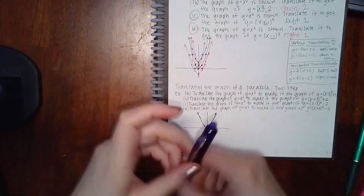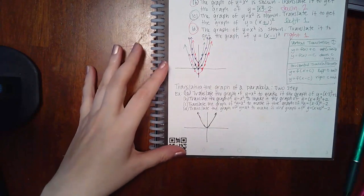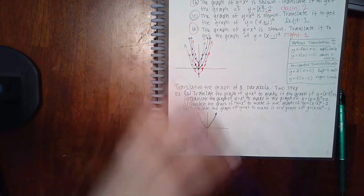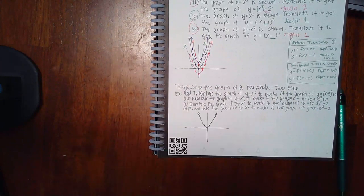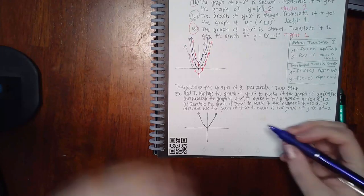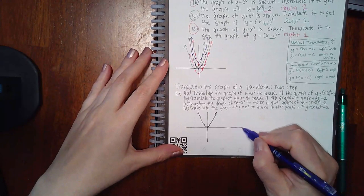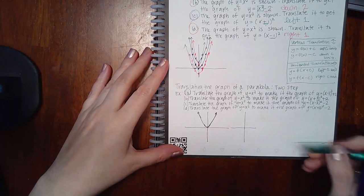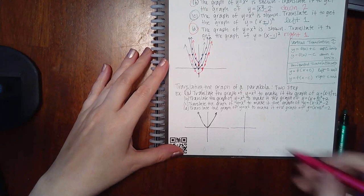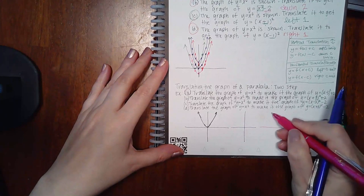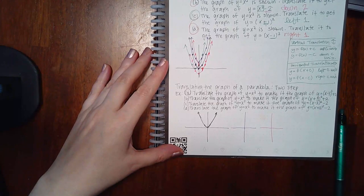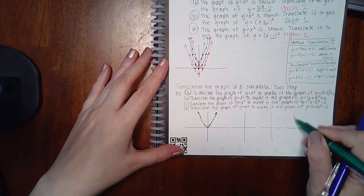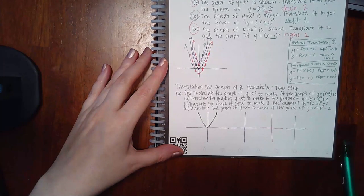Now we'll do the same thing for the next example, which involves two steps. I'm going to draw four different graphs: one in purple, one in pink, one in green, and finally one in red.